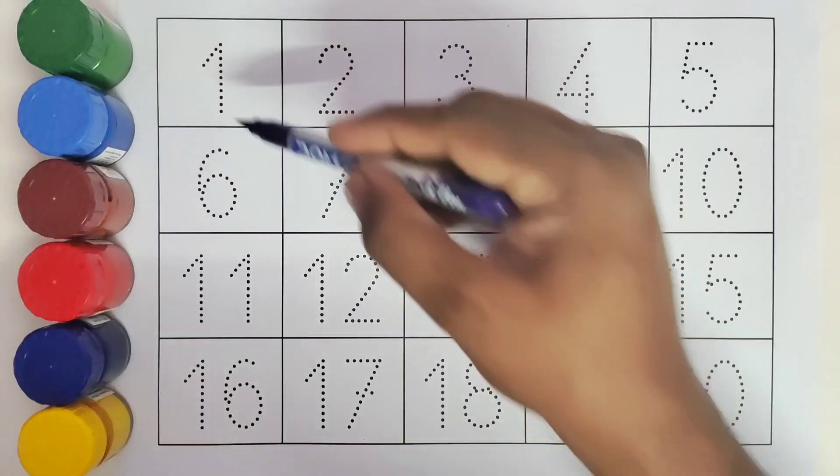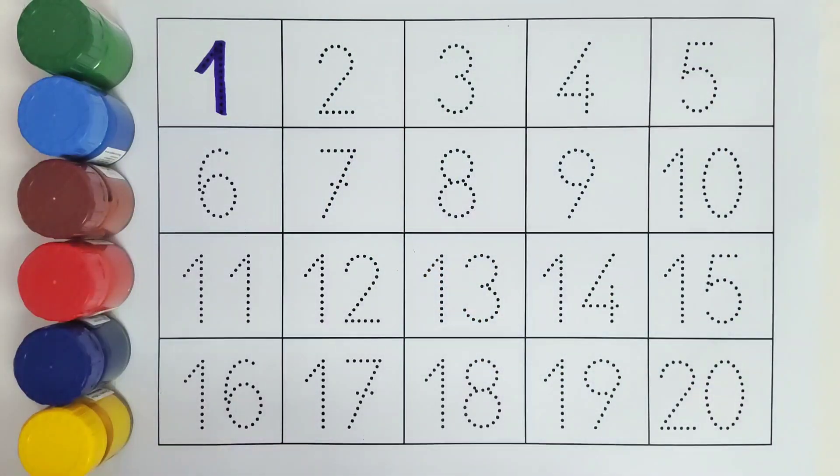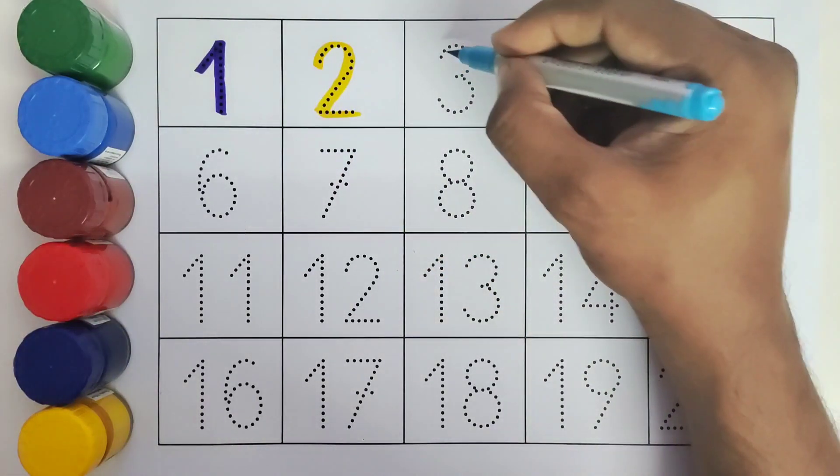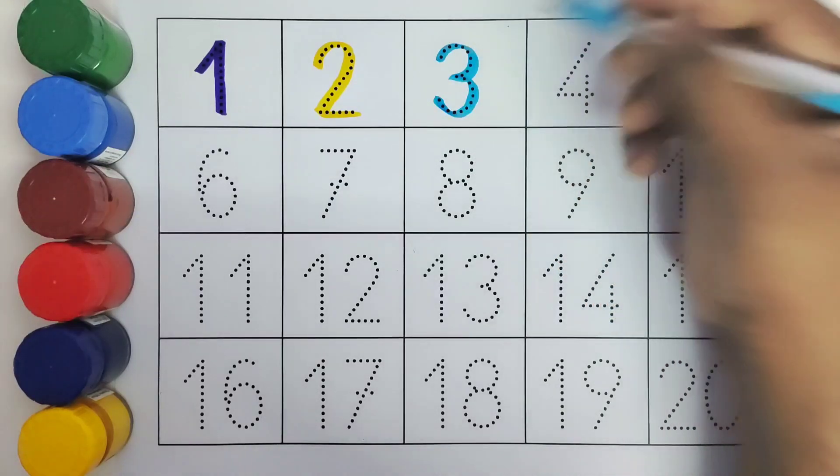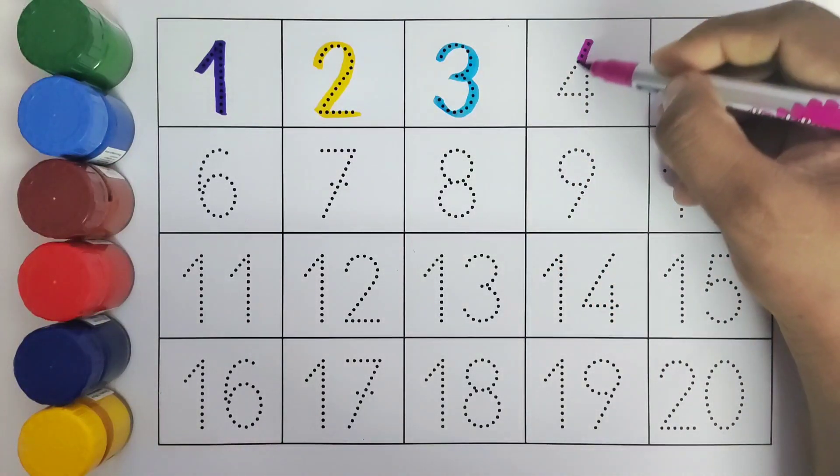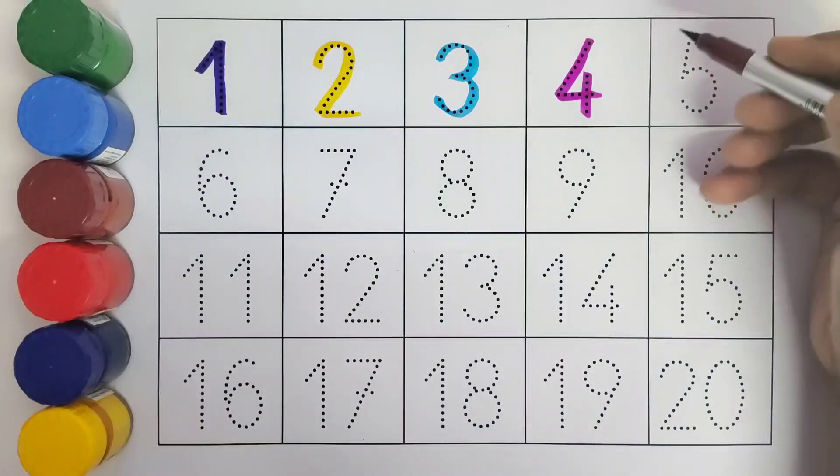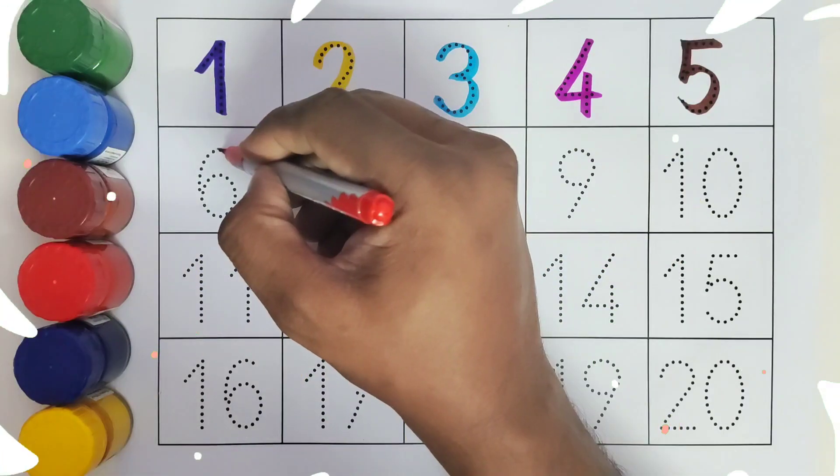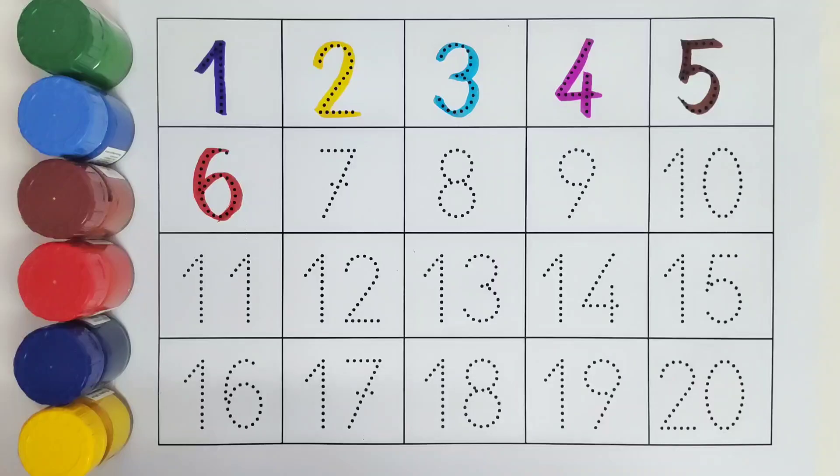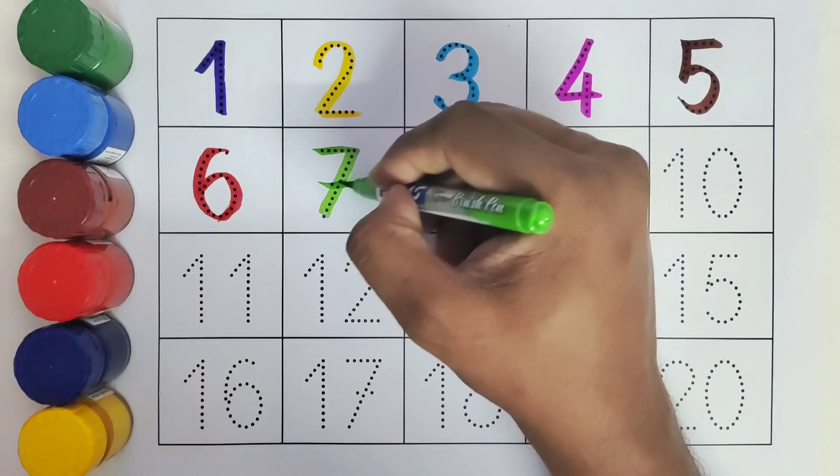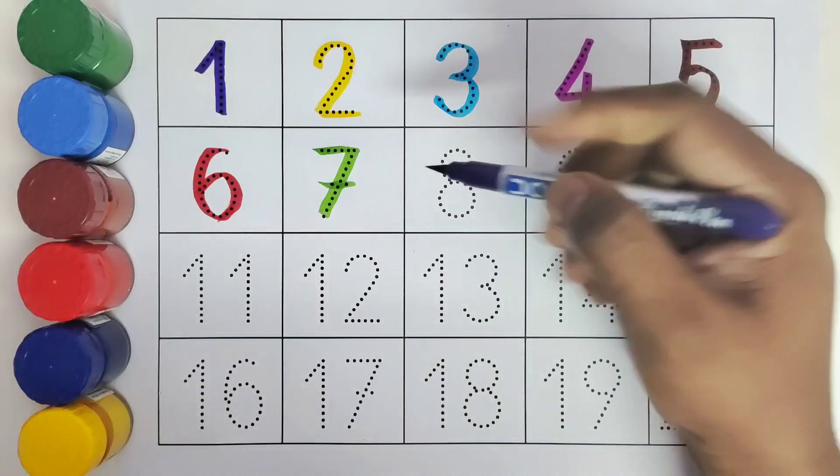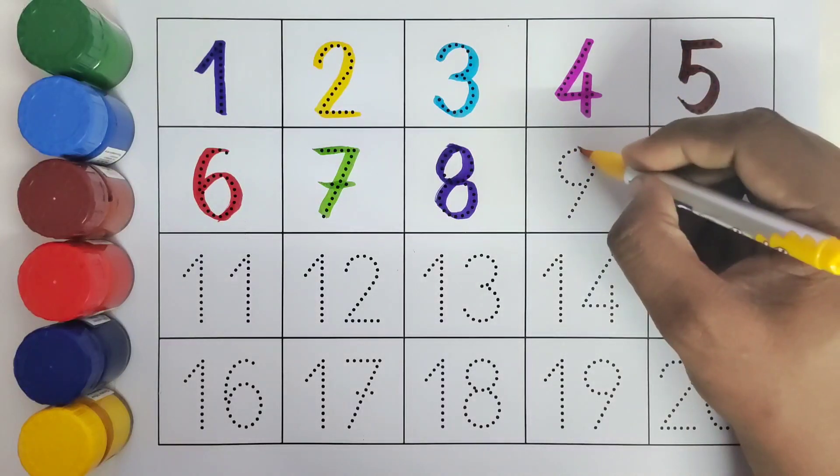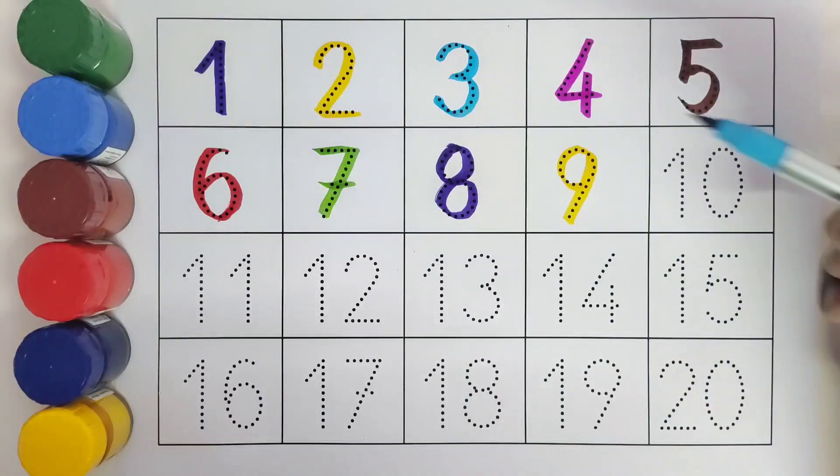Let us get started. This is 1. This is 2. This is 3. This is 4. This is 5. This is 6. This is 7. This is 8. This is 9. This is 10.